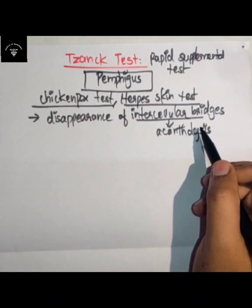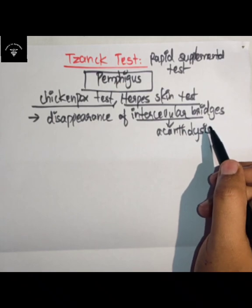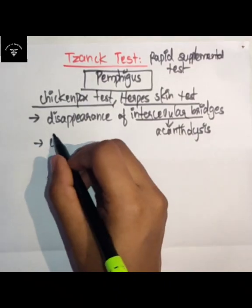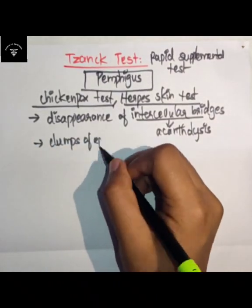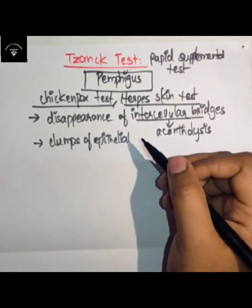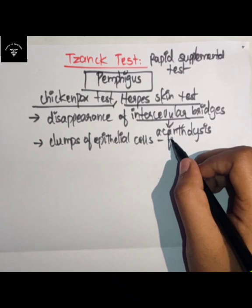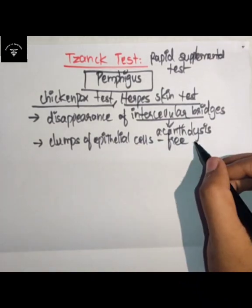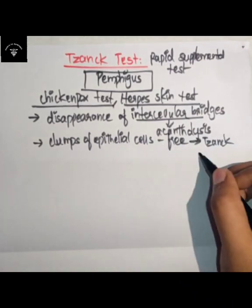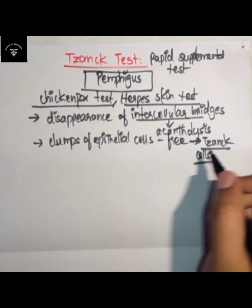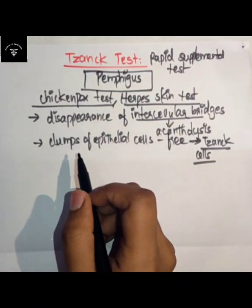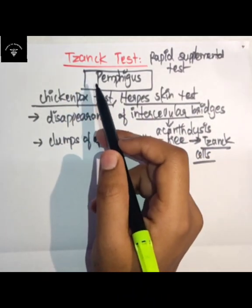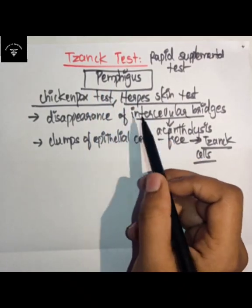Because of acantholysis, clumps of epithelial cells are found lying free within the vesicular space. These clumps of epithelial cells lying free within the vesicular space are called Tzanck cells. The scraping of the ulcer base to look for these Tzanck cells is known as the Tzanck test.